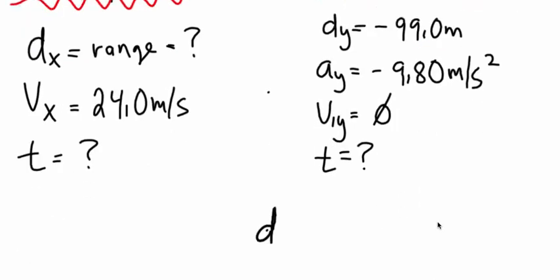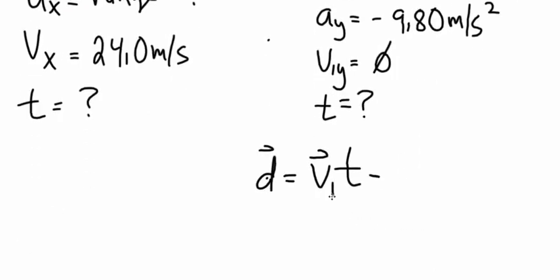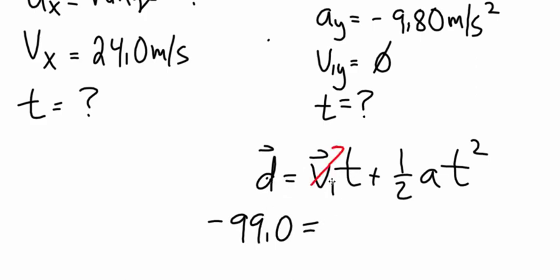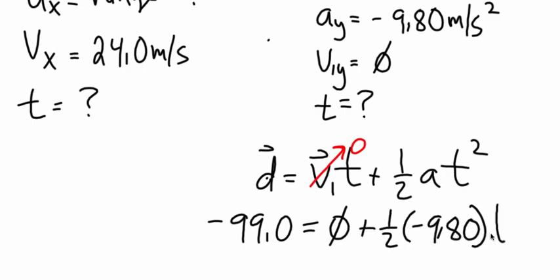So we're going to use the kinematic equation, d equals v initial t plus one-half a t squared. d is negative 99. Now if we look right here, the initial speed in the Y direction is zero. So we can put zero plus one-half, acceleration is negative 9.8, times t squared.